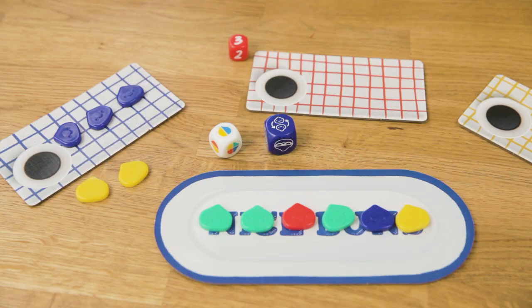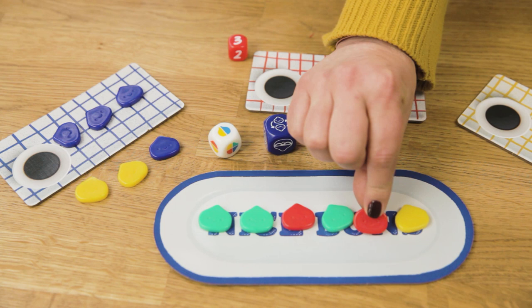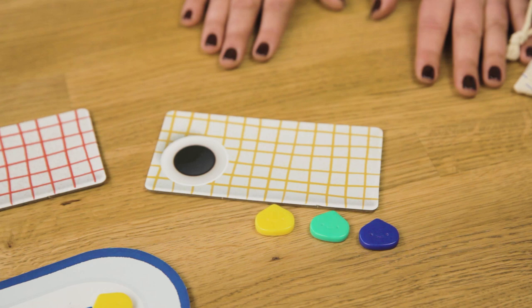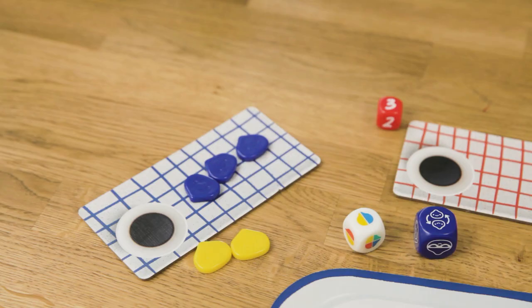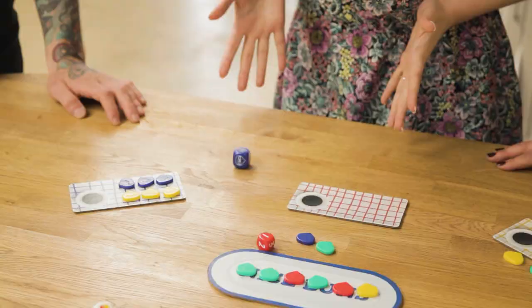Now the player with the medium dice resolves the action. They take a blue or a yellow bun from the serving tray. Then resolve the large dice. Looks like my yellow bun is being traded for a blue one. That makes another group of three.